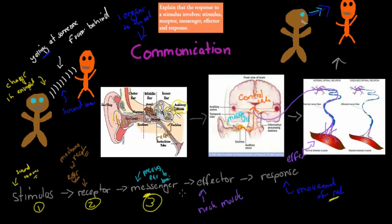That's another example of the stimulus-receptor-messenger-effector-response sequence of events leading to a response. It's not just that you have a stimulus and suddenly you have a response — there are steps in between. You need to be able to explain how this can happen using an example like thermoregulation or any other, showing how a stimulus ends up with a response and the steps in between.